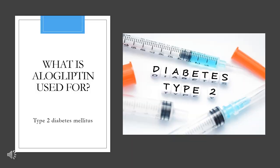What is alogliptin used for? It is indicated as an adjunct to diet and exercise to improve glycemic control in adults with type 2 diabetes mellitus.